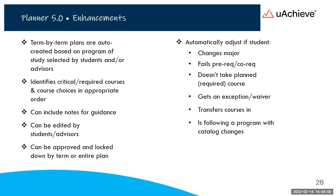Planner 5.0 will also automatically adjust going forward based on changes. For example, if a student changes their declared major, the plan will reflect the new major. If they fail a prerequisite or co-req, it adjusts for that. If they don't take a planned required course, it pushes it into a future term. It will also reflect exceptions and waivers, accommodate transfer work, and reflect any catalog changes in the planning process.